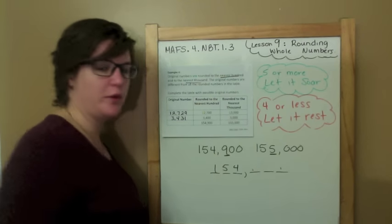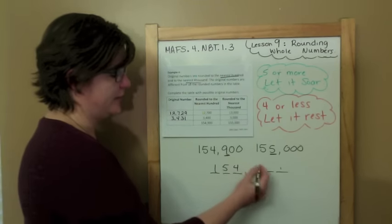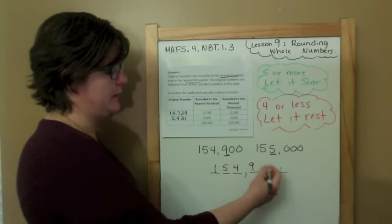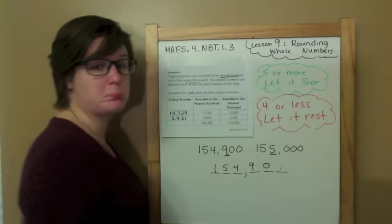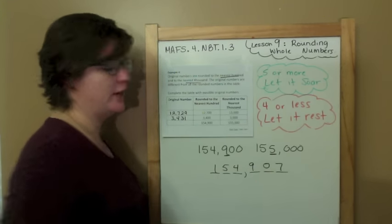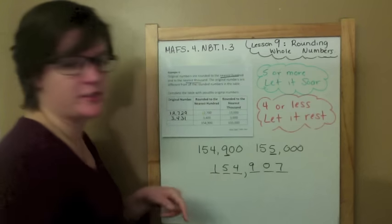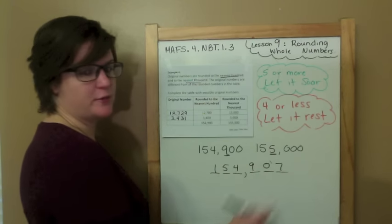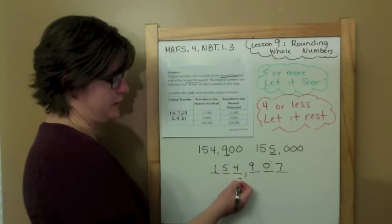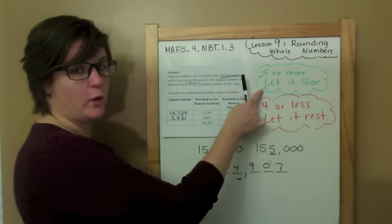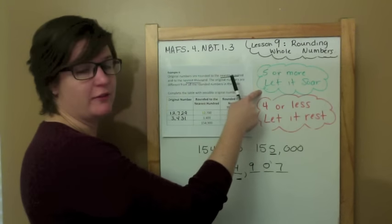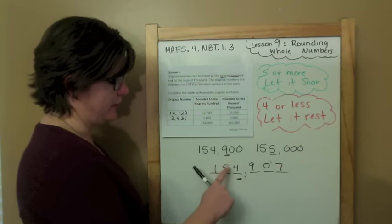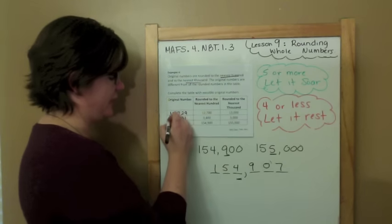I'm going to put 154, keep the nine there and play with it. What could I put in the tens place to keep it at a nine? I could put a zero — that would keep it a nine. Let's check it out. Rounding to the nearest hundred — spotlight to the right — that makes this stay the same — everything else becomes zero. This one works. And rounding to the nearest thousand — spotlight to the right — five or more, let it soar — and this becomes a five: 155,000. Everything else becomes zero. So my answer here would work.